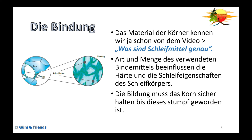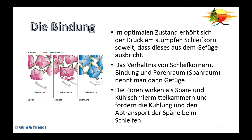Die Aufgabe von der Bindung ist, das Korn sicher zu halten, um es stabil zu machen. Und natürlich muss die Bindung das Korn dann auch rechtzeitig freigeben, wenn das Korn stumpf geworden ist. Der optimale Zustand ist dann, wenn das Korn stumpf ist – der Schleifdruck erhöht sich, und die Belastung für die Bindung wird immer höher. Dann bricht das Korn weg – es bricht aus dem Gefüge aus, oder auch ein Totalausbruch, das heißt das Korn geht im ganzen Stück vom Schleifmittel weg. Es gibt allerdings auch noch einen Makroausbruch: ein Stück vom Schleifkorn bricht ab und es entstehen neue scharfe Kanten, sodass das Schleifmittel wieder weiter schleifen kann.